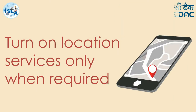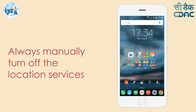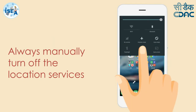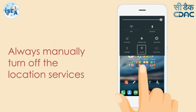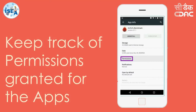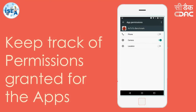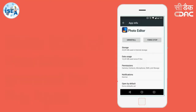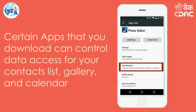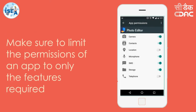Turn on location services only when required; always manually turn off location services. Keep track of permissions granted for your apps — certain apps you download can control data access for your contact list, gallery, and calendar.